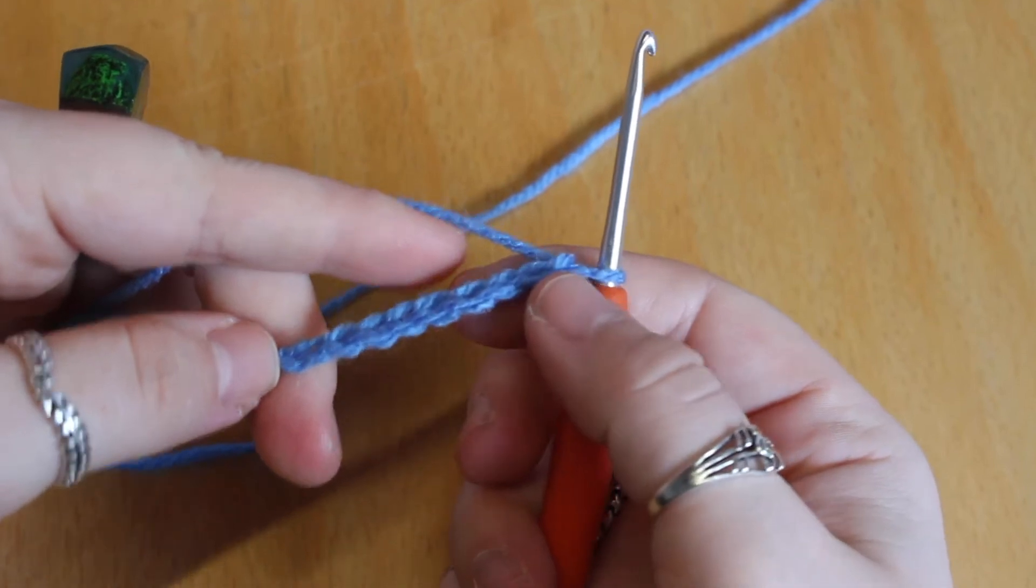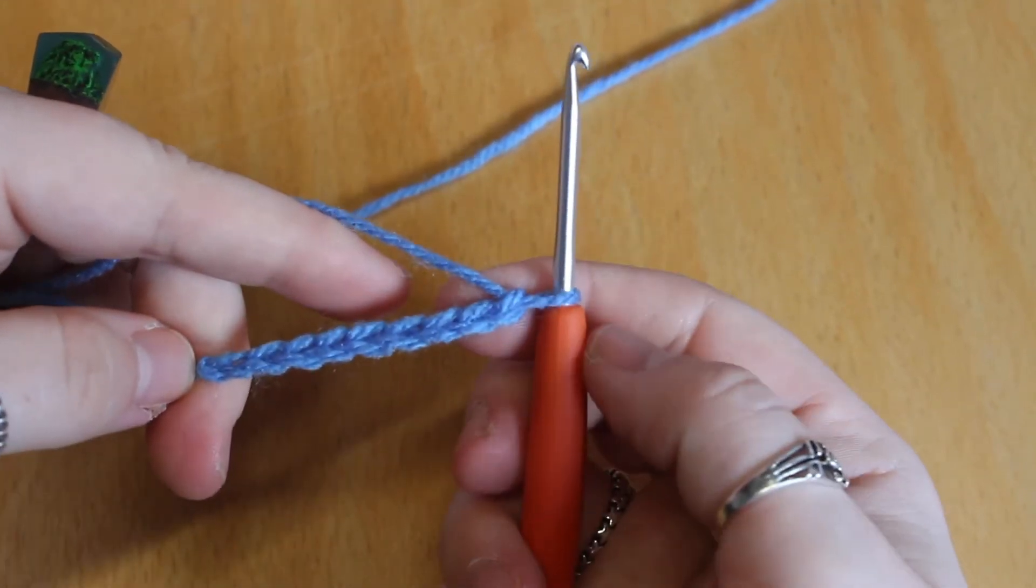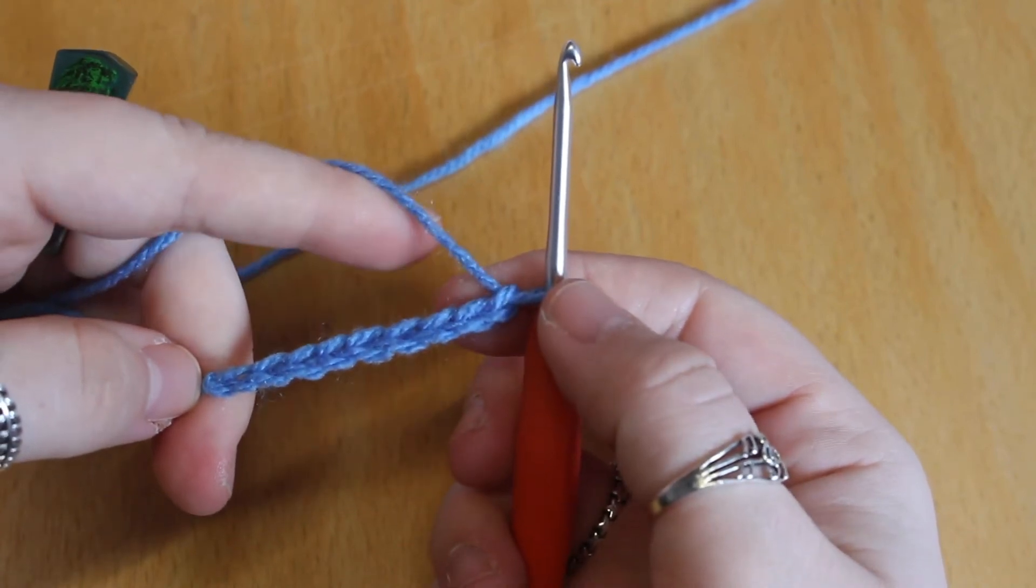So what I'm going to do is just chain a few stitches to start off with. I've chained nine as the ninth stitch is my turning chain and I want to create a row of eight.